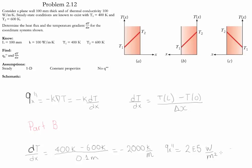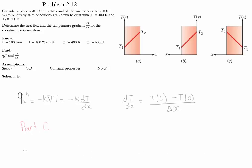Let's now do Part C. The gradient of the temperature for this case is defined as: the temperature at L is 600 Kelvin, the temperature at 0 is 400 Kelvin, and the distance between them is 0.1 meter. This gradient equals positive 2,000 Kelvin per meter.